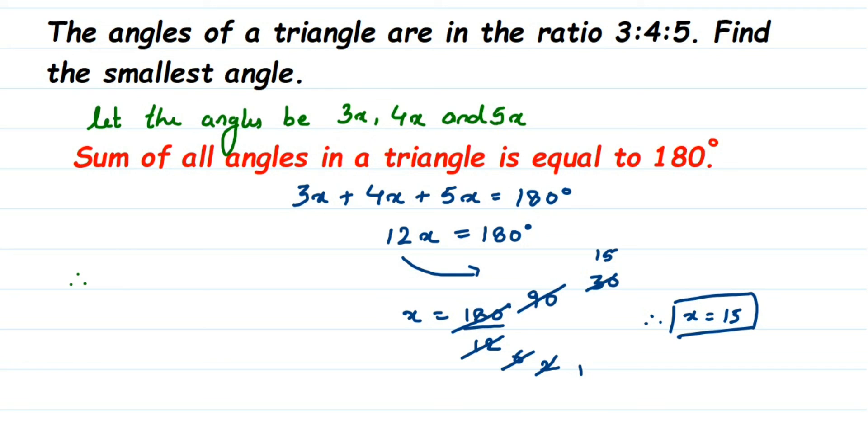Therefore, smallest angle is equal to, the smallest angle is 3x. In place of x, we will substitute 15. So, it's 3 into 15 which is 45. We'll get here 45 degrees.